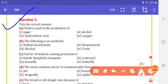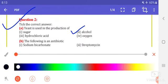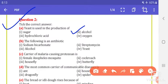Question number two, tick the correct answer. Yeast is used in the production of alcohol. The following is an antibiotic: sodium bicarbonate, streptomycin, alcohol, or yeast. So answer is streptomycin.